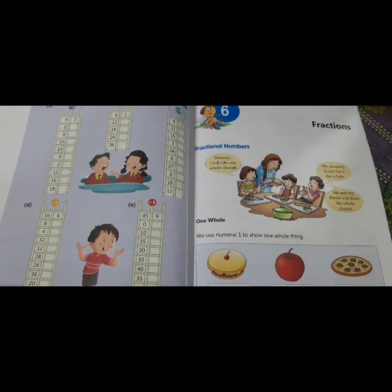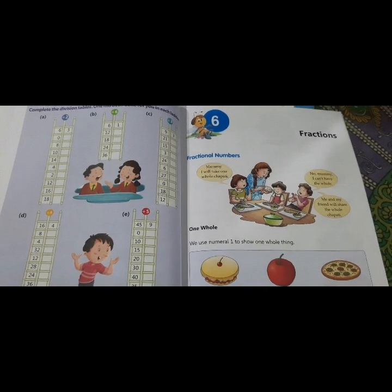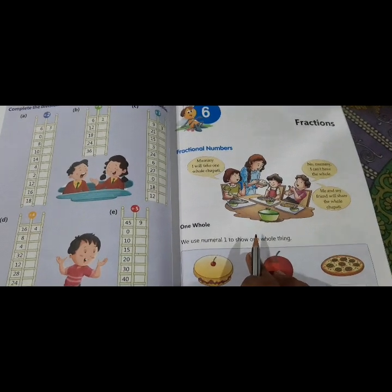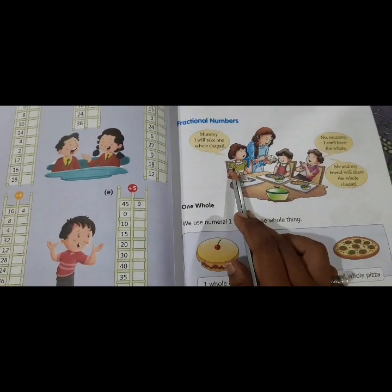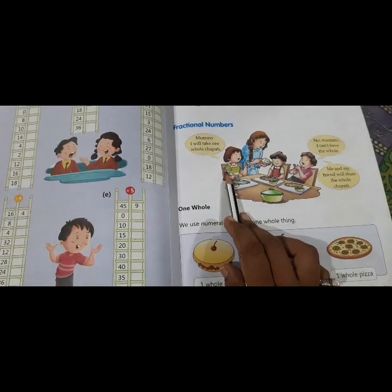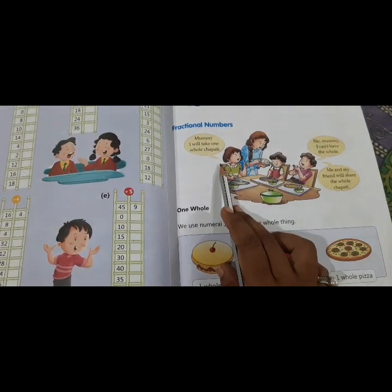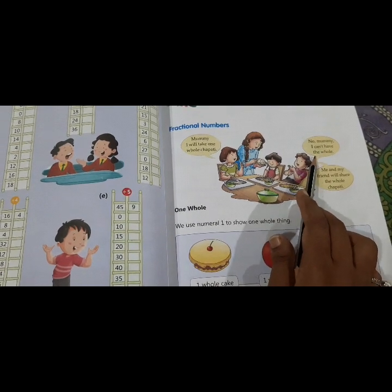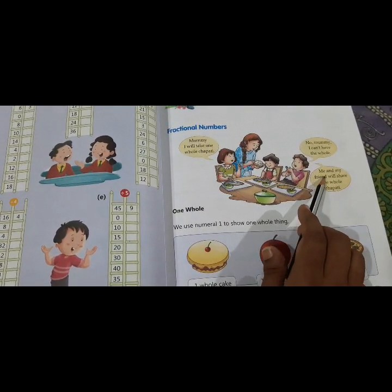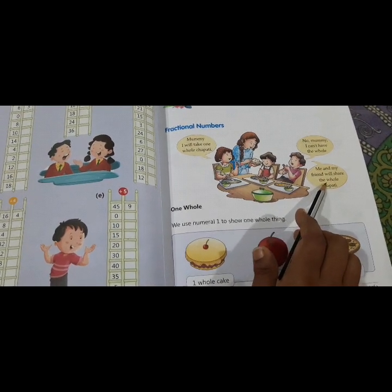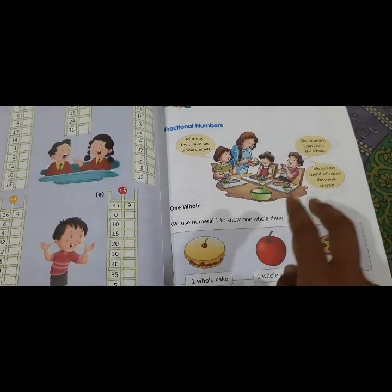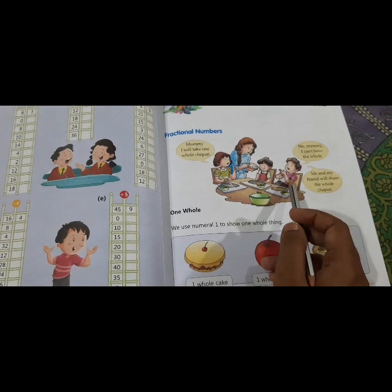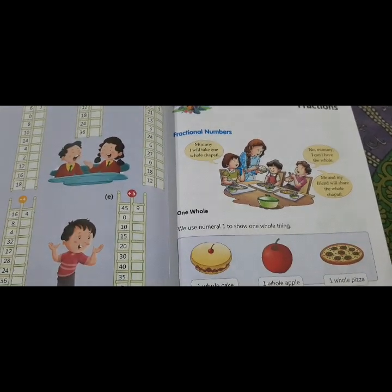Okay students, open page number 95, Chapter 6, Fraction. Fractional number. For that, we have one example also here. One child asks to his mom, Mommy, I will take one whole chapati. Another child is asking to his mommy, No, mommy. I can't have the whole. Me and my friend will share the whole chapati. Now, how they both are sharing the whole chapati? Half is eaten by him and half is eaten by his friend.